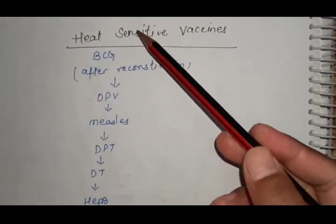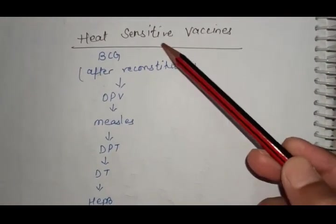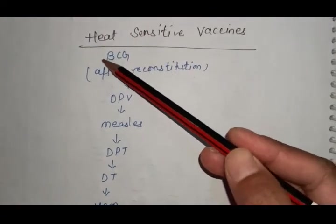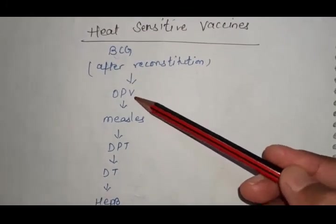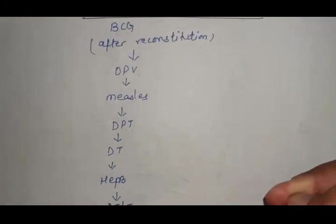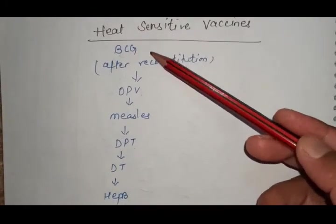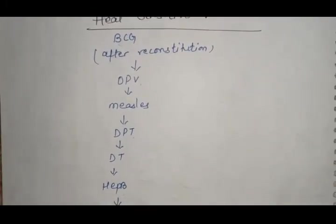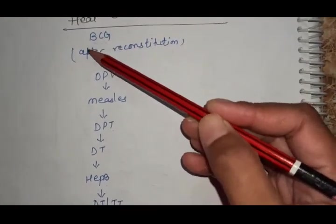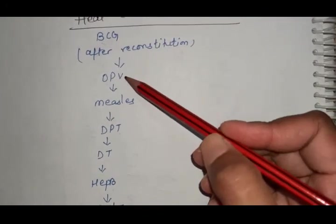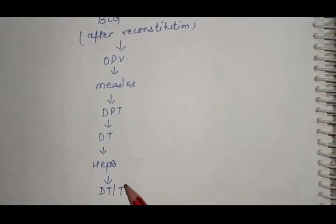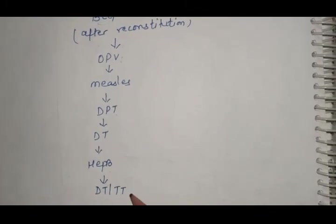The series of heat sensitive vaccines: after reconstitution BCG is most sensitive to heat, then OPV, measles, DPT, DT, Hepatitis B and TT. OPV is the most sensitive to heat, and less sensitive to heat is DT or TT.